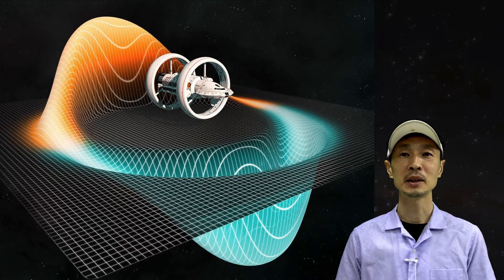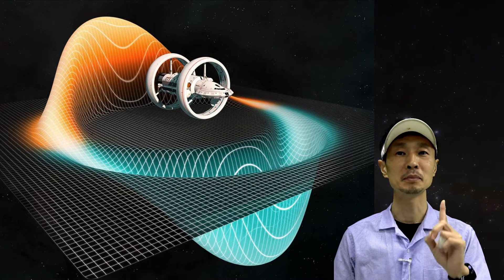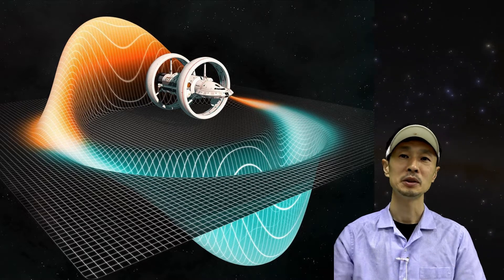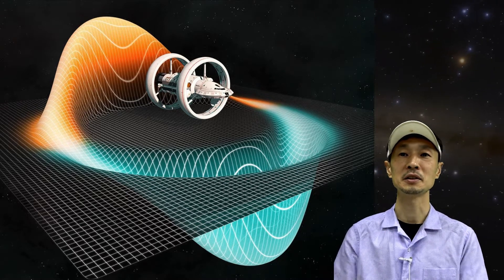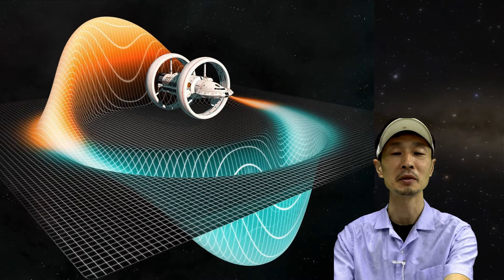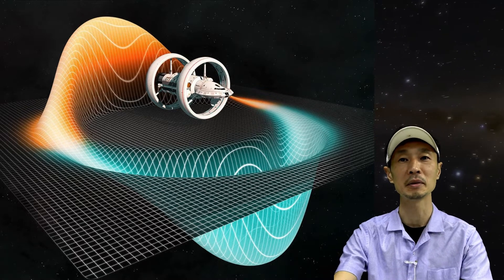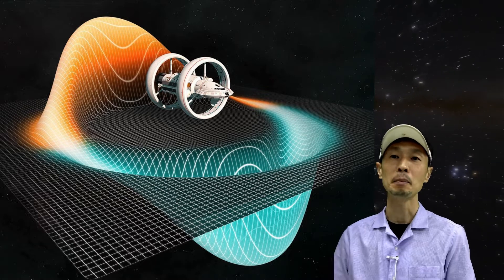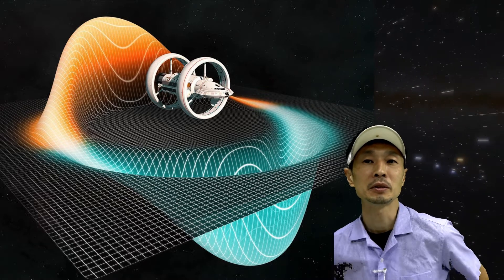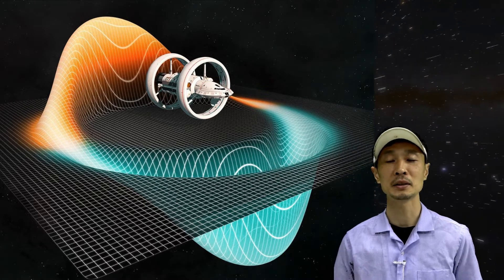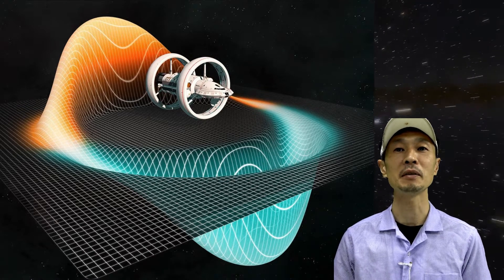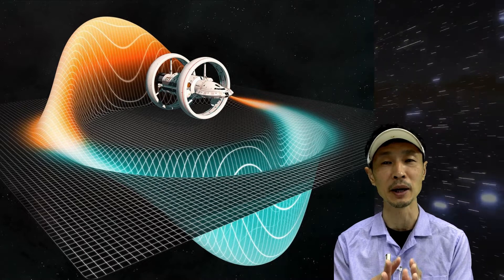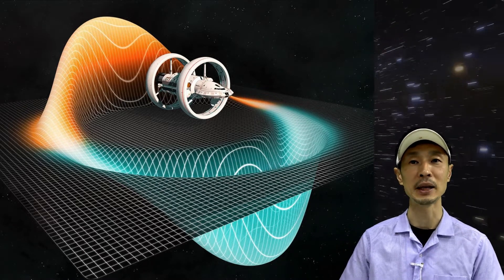However, Alcubierre's warp drive had one problem. You can shrink space in front of you using a very dense object, such as a neutron star. Because of its gravity, space in front of you will shrink a little bit. But behind you, you need to expand the space. You cannot do that with gravity because gravity is a pulling force. It shrinks space but cannot expand it.